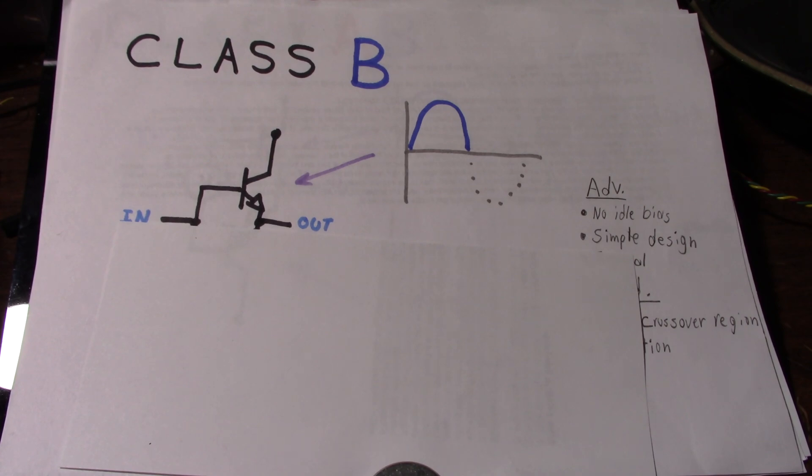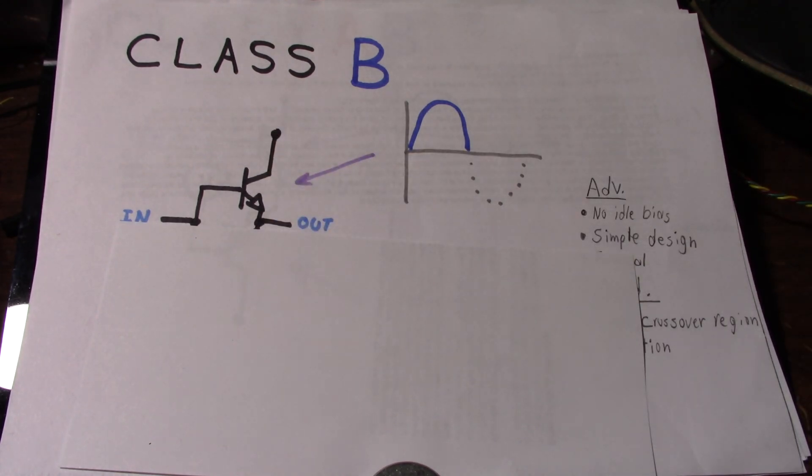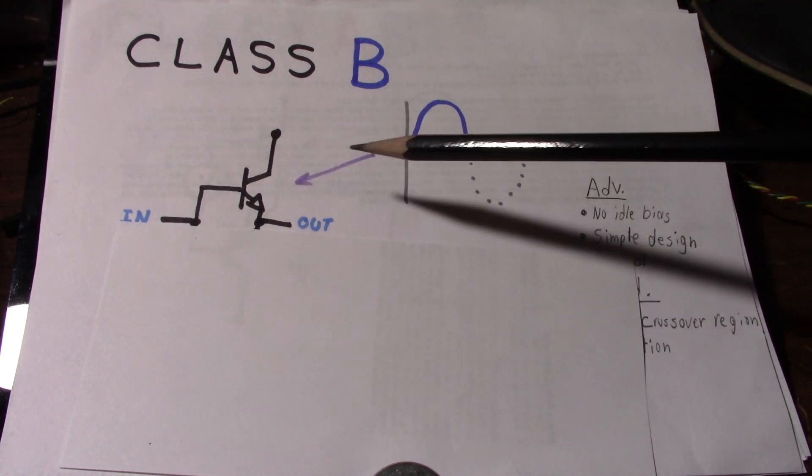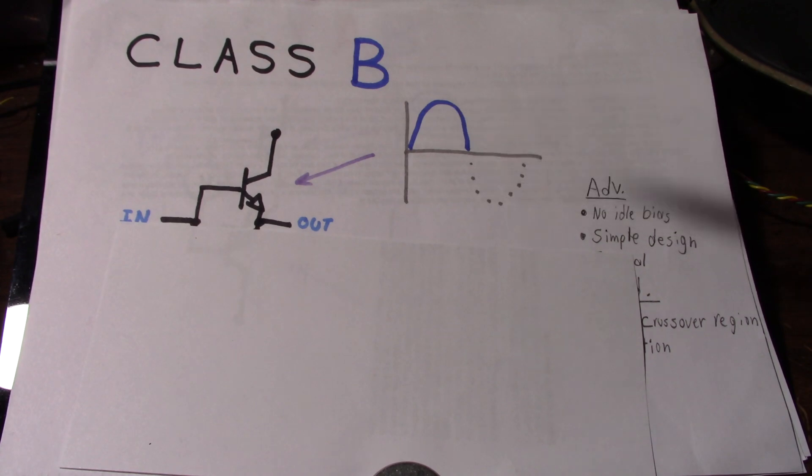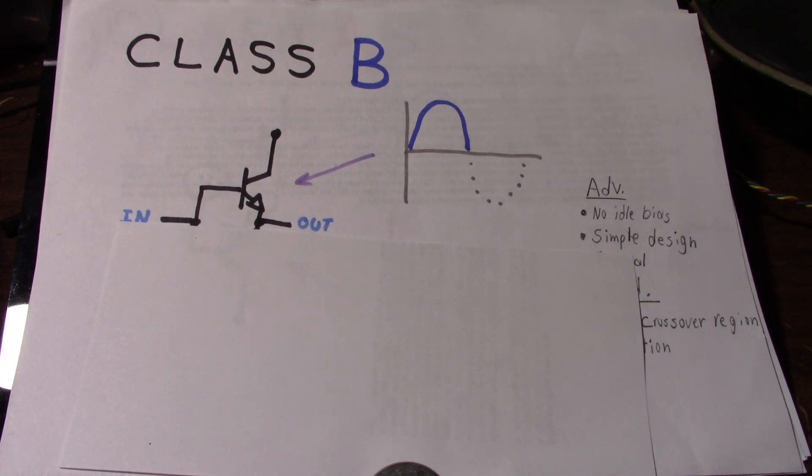So a Class B amplifier. What is Class B? Well, if you recall from the Class A amplifier, the device is turned on for the full cycle of the waveform. But Class B is a little bit different. It's only on for 50% of the cycle. And you can probably already see a problem with that. If you try to put a music signal to such an amplifier, it's going to sound pretty terrible.